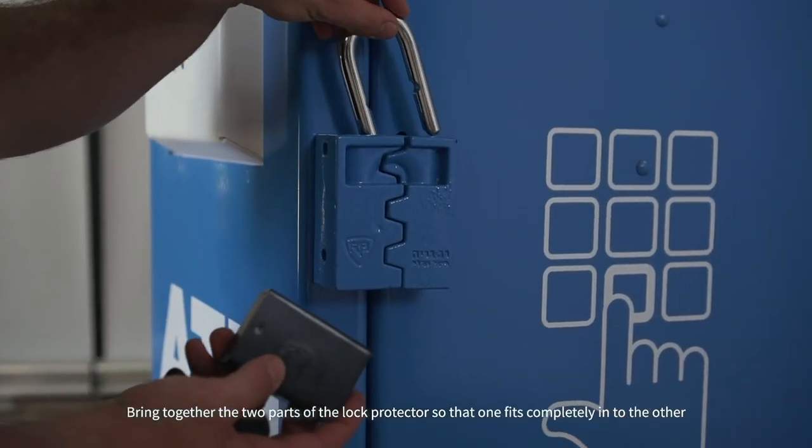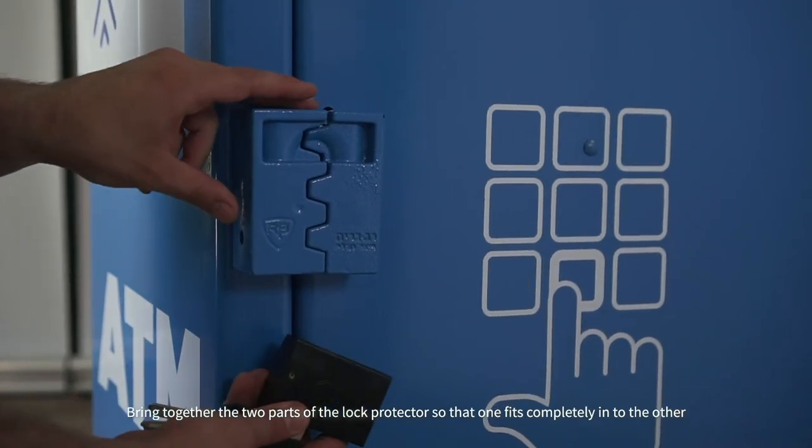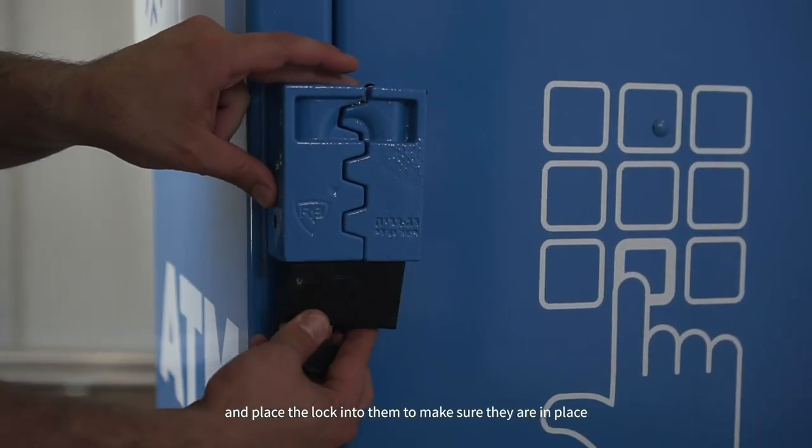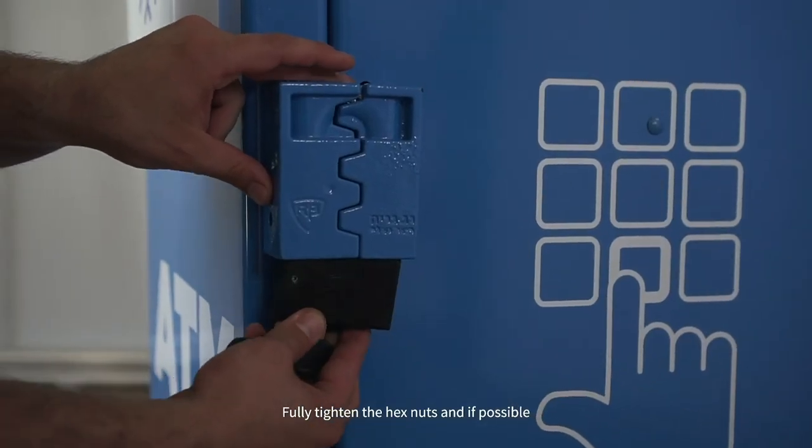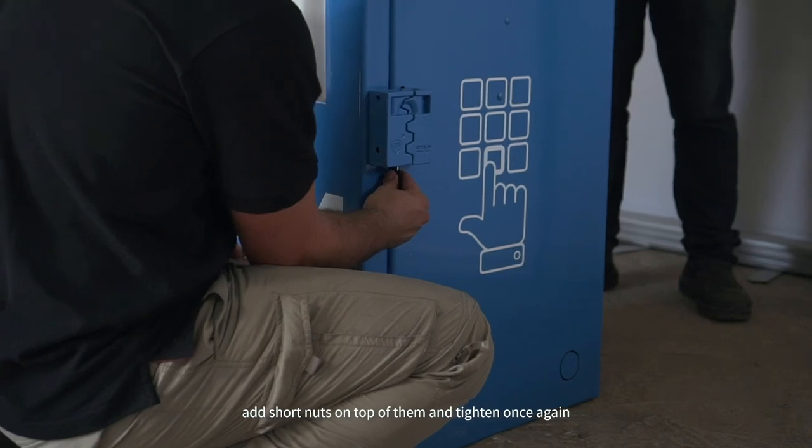Bring together the two parts of the lock protector so that one fits completely into the other, and place the lock into them to make sure they are in place. Fully tighten the hex nuts and if possible, add short nuts on top of them and tighten once again.